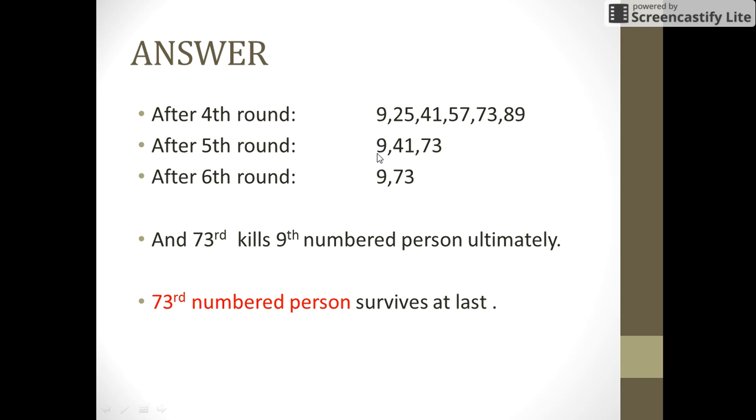So after the 5th round we have 9, 41 and 73 numbered people as survivors. In the next round 9 kills 41 and passes the sword to 73. So 73 ultimately gets to kill the 9th numbered person and he is the lone survivor.